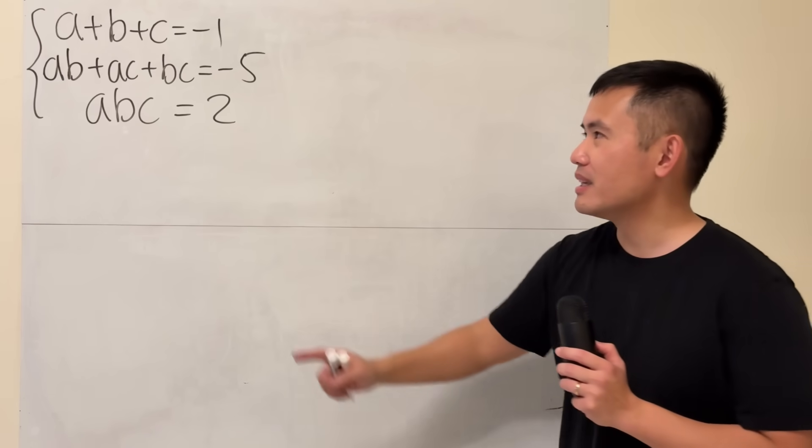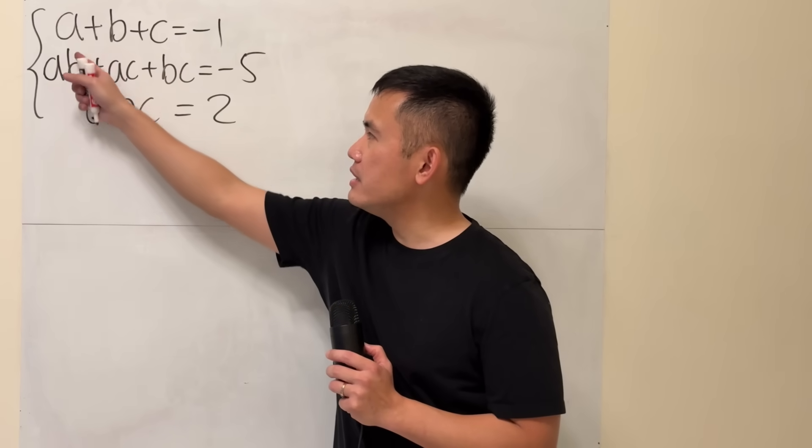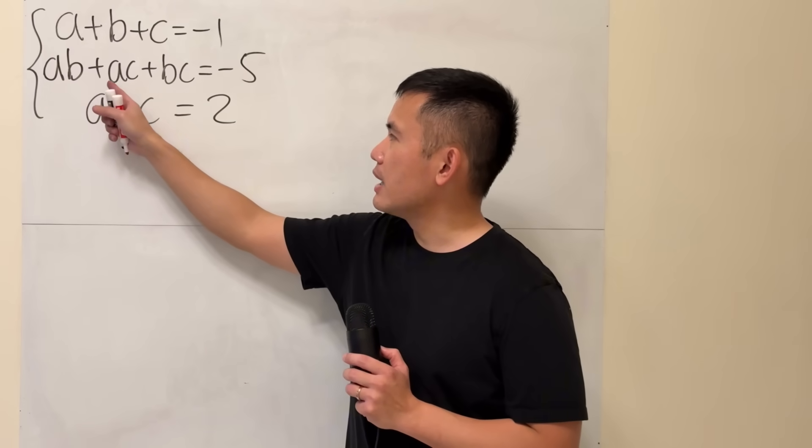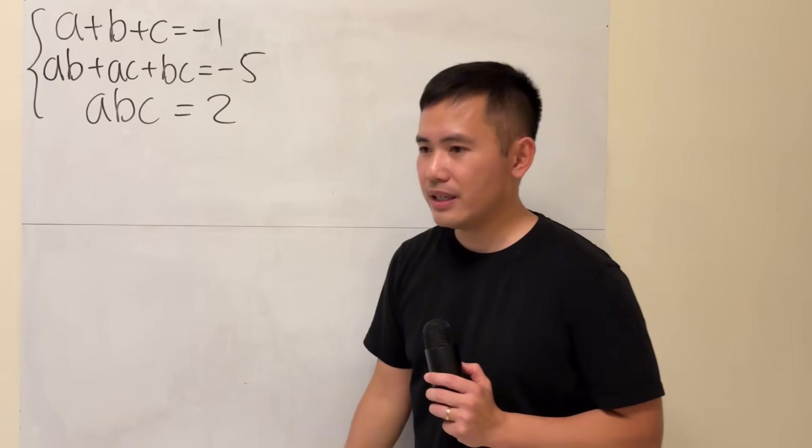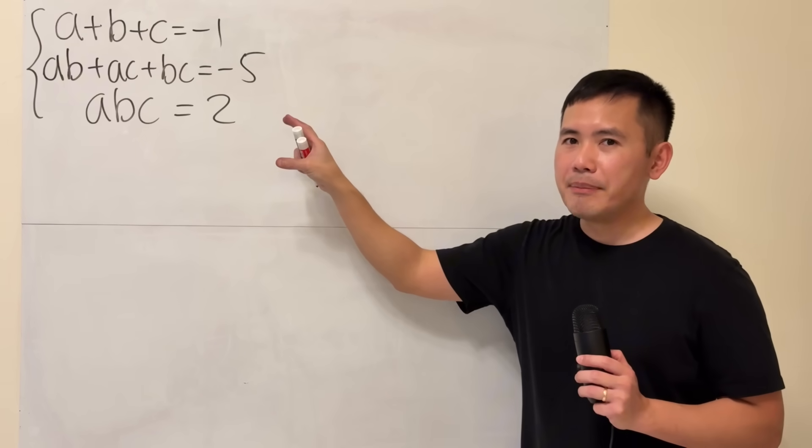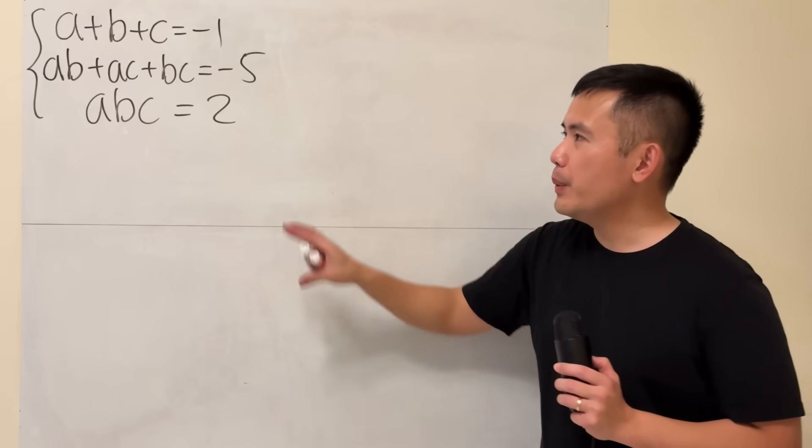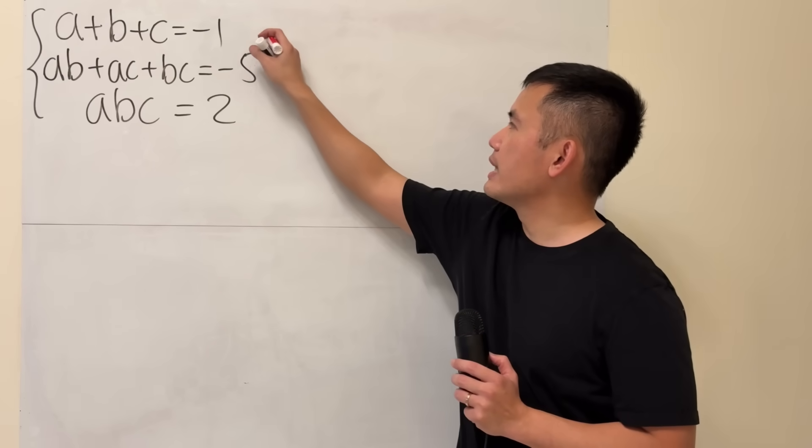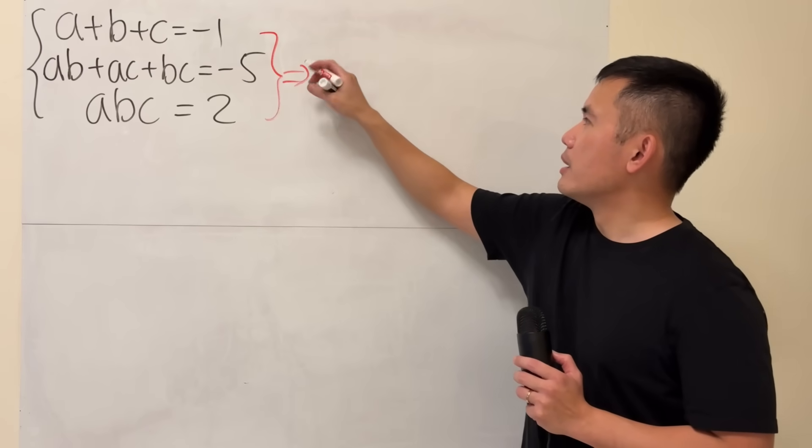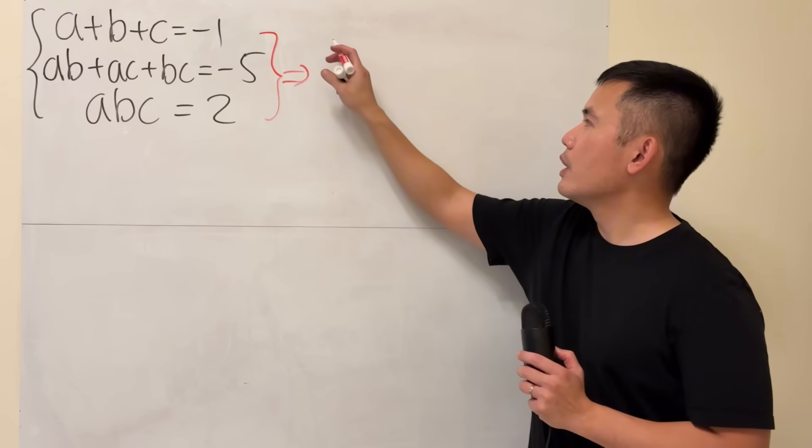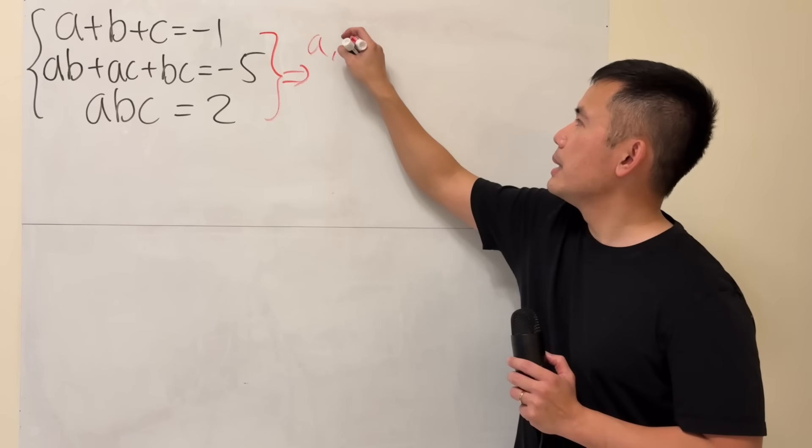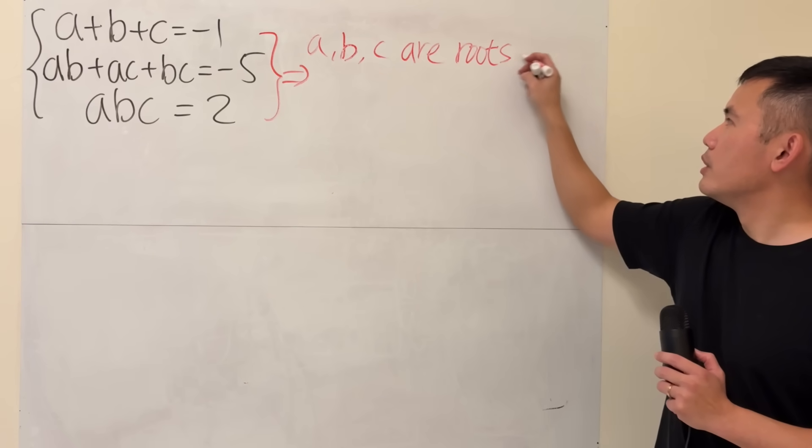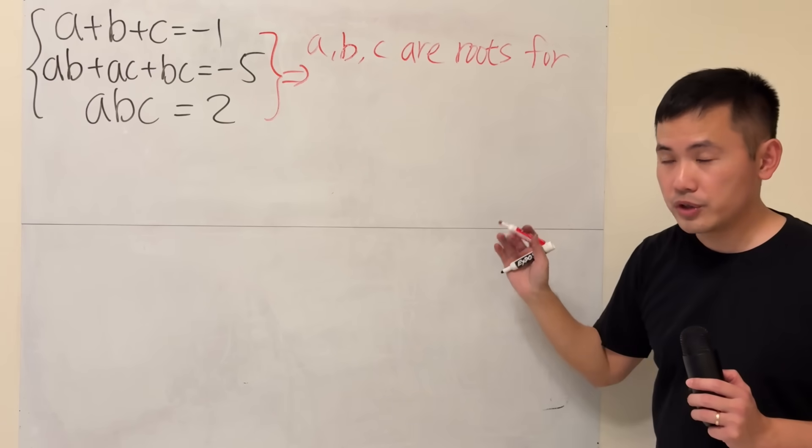And the reason that we know that is because notice that we have the sum of A, B, C, the product of ABC, as well as we have AB plus AC plus BC. Whenever this happens, we can use Vieta's formula, and we can turn this into a cubic equation. Let me write that down for you guys. By Vieta's formula, I will tell you A, B, C are the roots for the following cubic equation.